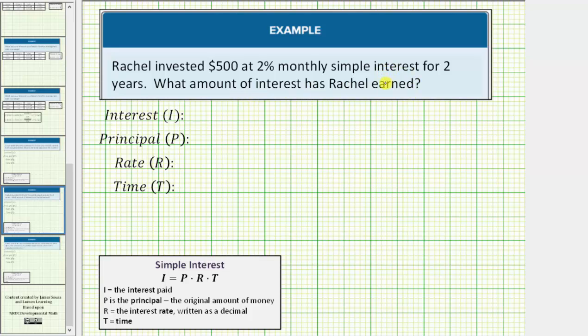To answer this question we'll be using the simple interest formula shown below. I equals P times R times T, where I is the interest paid, P is the principal or starting amount, R is the rate as a decimal, and T is time.